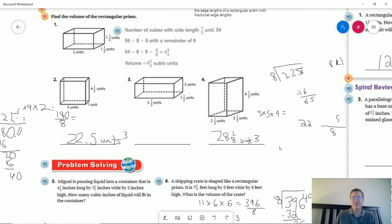So number 4, I did 5 times 5 times 9 and that gives us 225. 225 divided by 8 would give us an amount that would give us 28 and an eighth units cubed for the area.